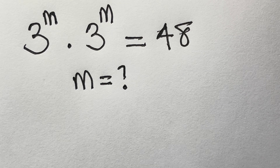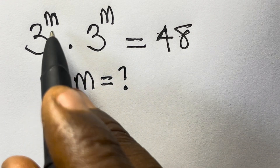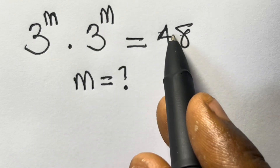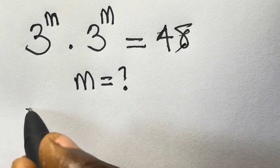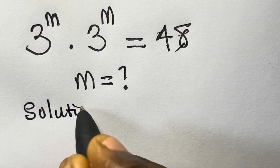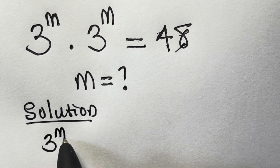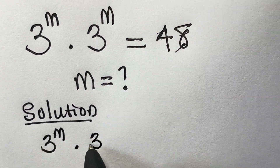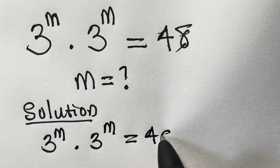Hi, welcome to mathematics. In this problem we want to solve for m, where 3 raised to power m times 3 raised to power m equals 48. Let's find the solution. We have 3 raised to power m multiplied by 3 raised to power m equals 48.